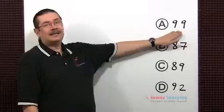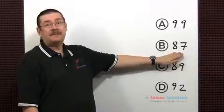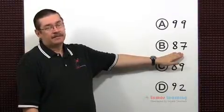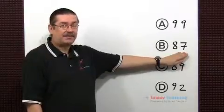99 is 9 times 11, so it is not prime. 87 is divisible by 3, it's not prime either. How do I know this? Well, if you add up the digits you get 15 which is divisible by 3.